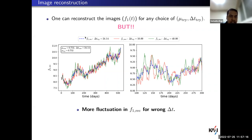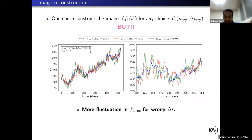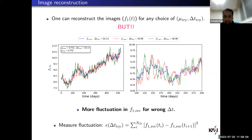For simplicity, fixing the trial magnification ratio to an arbitrary value, we plot three reconstructed image light curves corresponding to three different time delays. The dashed blue corresponds to the true time delay; red and green correspond to wrong time delays. The green and red curves show more fluctuation than the dashed blue. This is observed in all cases: we get more fluctuations in the reconstructed image light curve when it is reconstructed using a wrong time delay.